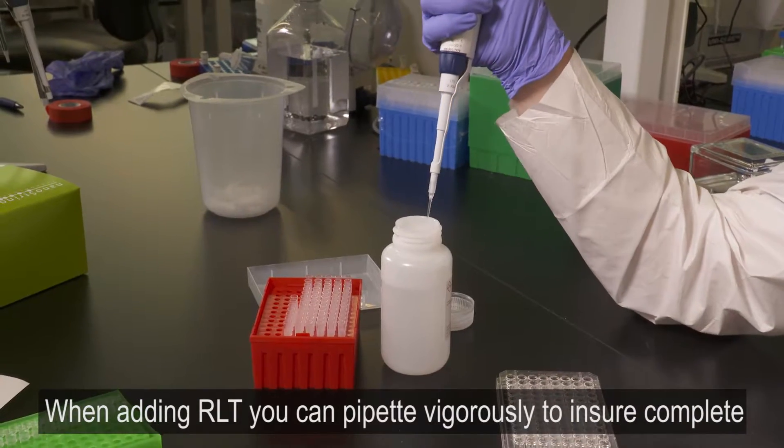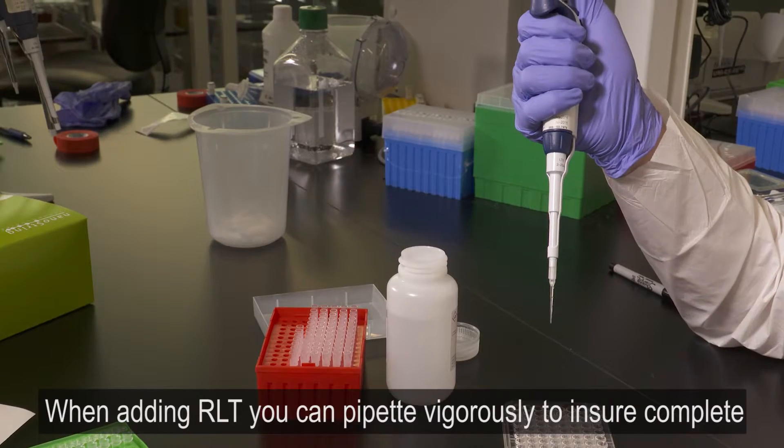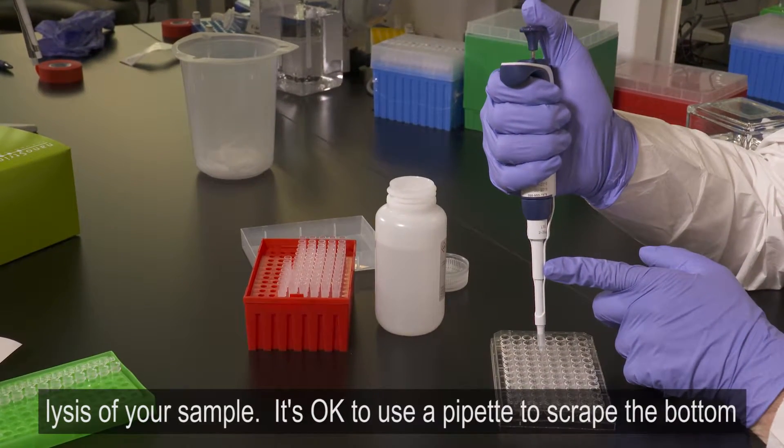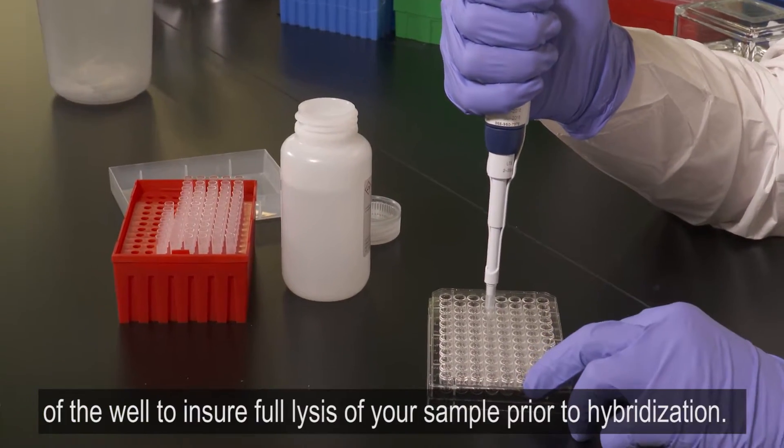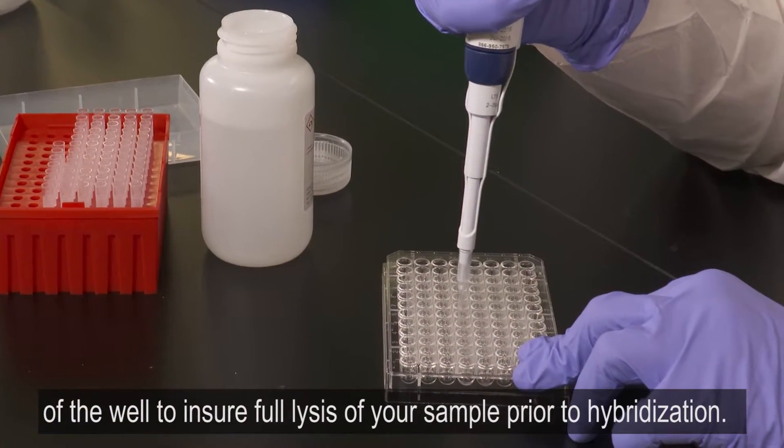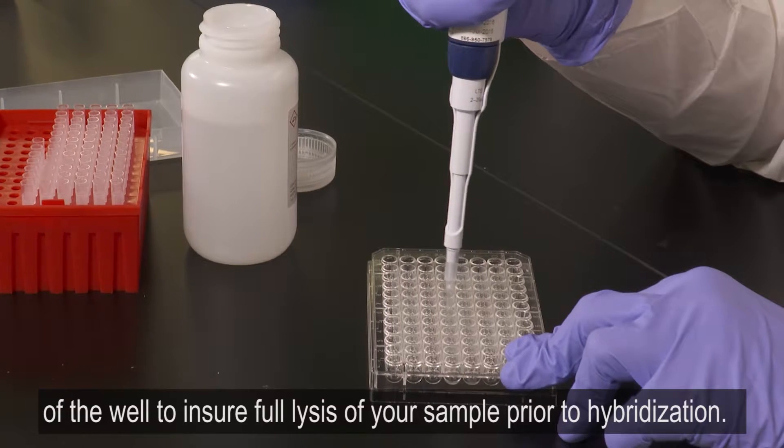When adding RLT, you can pipette vigorously to ensure complete lysis of your sample. It's okay to use the pipette tip to scrape the bottom of the wells to ensure full lysis of your sample prior to hybridization.